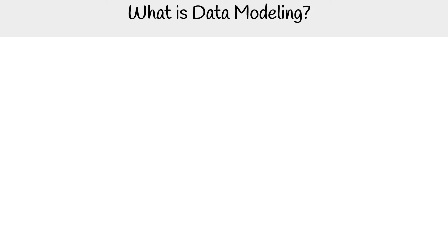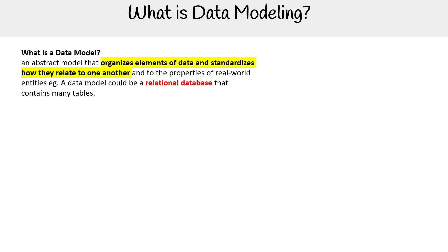Hey, this is Andrew Brown from ExamPro and we're looking at what is data modeling. But before we can answer that, we should ask what is a data model. So it's an abstract model that organizes elements of data and standardizes how they relate to one another and to the properties of real world entities. A data model could be a relational database that contains many tables.